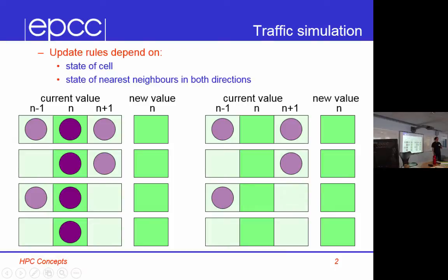You need to know who's behind you and who's ahead of you. If you're empty, you need to know who's behind you so you know whether something moves in. If you're full, you need to know who's ahead of you so you know if you can move forward. Because it's quite a simple model, it turns out you don't always need all the information — if you're full, you don't need to know who's behind you, because it doesn't matter.